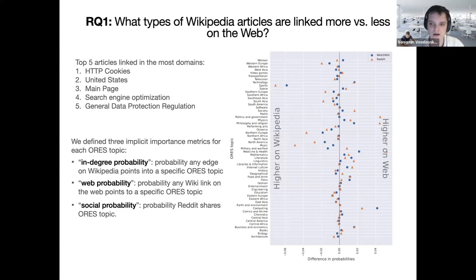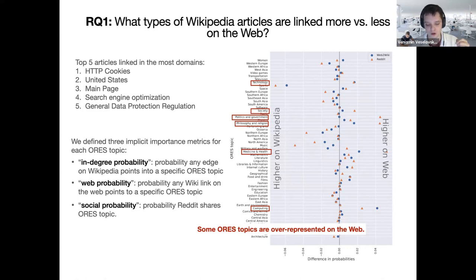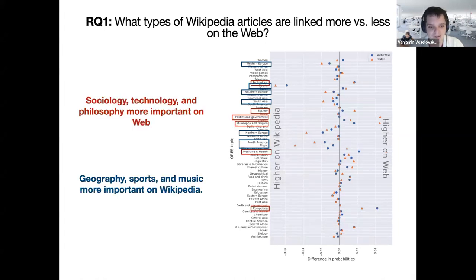What we find are some interesting results. Technology, society, politics and government, philosophy and religion, medicine and health, and computing have AORUS topics that are overrepresented on the web. Then there are others that are underrepresented — typically more geographic places, sports, and music — which actually have a higher importance score on Wikipedia.